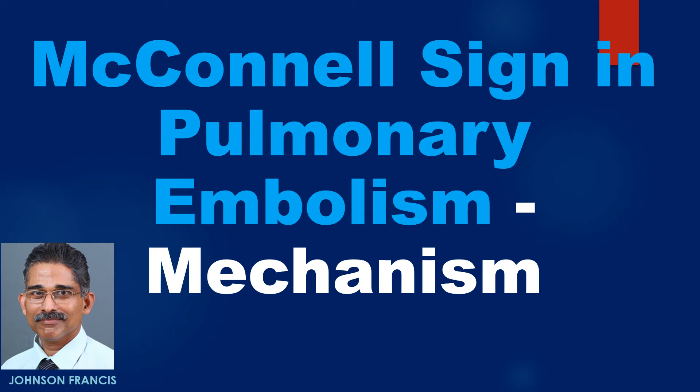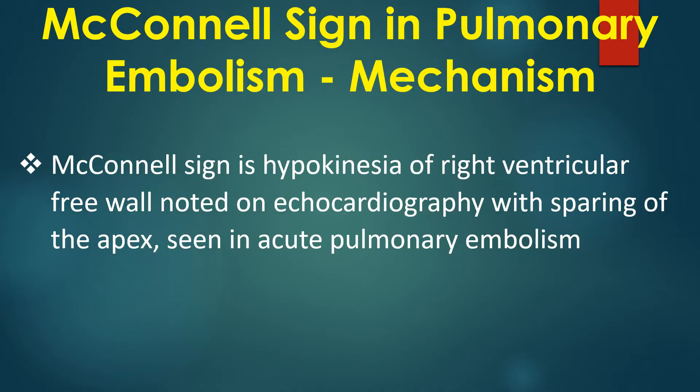Discussion on the mechanism of McConnell sign in pulmonary embolism and reverse McConnell sign. McConnell sign is hypokinesia of the right ventricular free wall noted on echocardiography, with sparing of the apex, seen in acute pulmonary embolism.